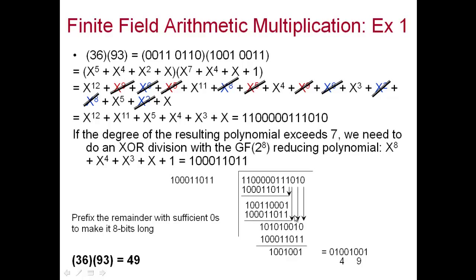After completing the XOR division, we get a 7-bit result, so we prefix with a zero to make 8 bits: 0100 1001. The upper four bits 0100 = 4 and the lower four bits 1001 = 9 in hexadecimal. So the product of 36 × 93 in GF(2^8) is 49.